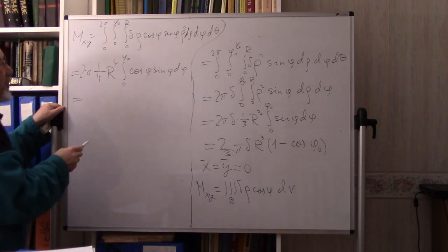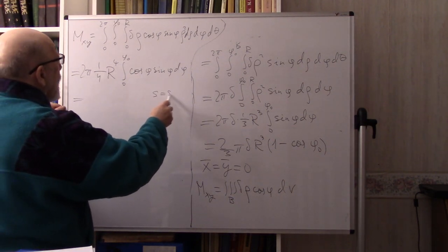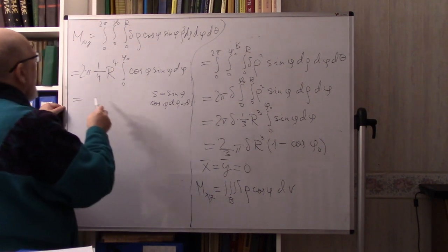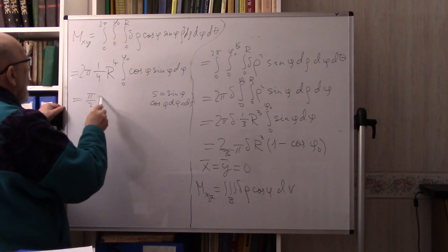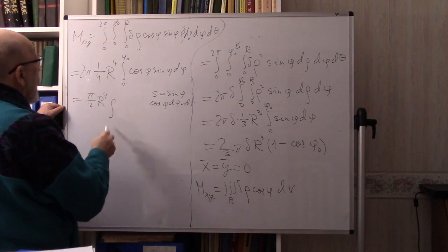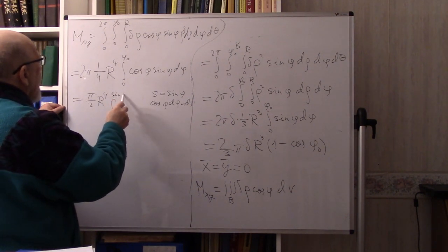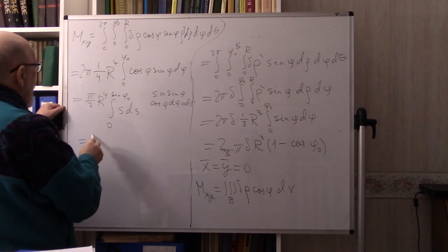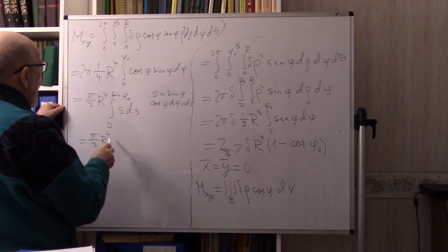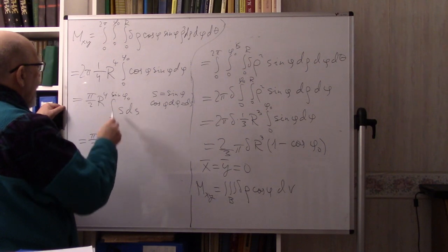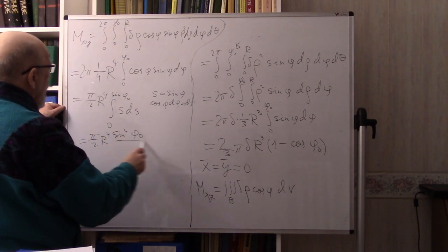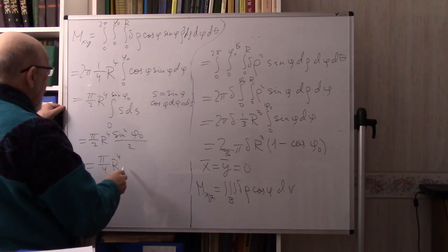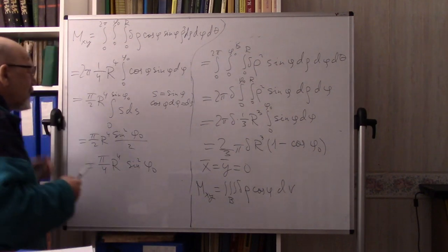The θ integral gives 2π. Integrating ρ³ from 0 to R gives (1/4)R⁴. So M_xy = 2πδ·(1/4)R⁴ times the integral from 0 to φ₀ of cos φ sin φ dφ. Substituting s = sin φ, ds = cos φ dφ, the integral from 0 to sin φ₀ of s ds = sin²φ₀/2. So M_xy = (π/4)δR⁴·sin²φ₀.